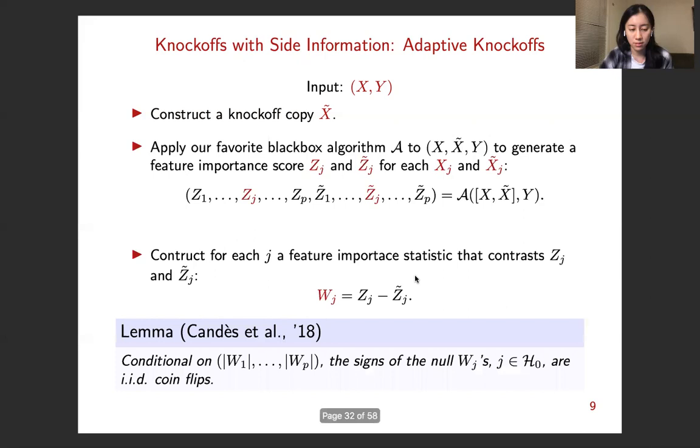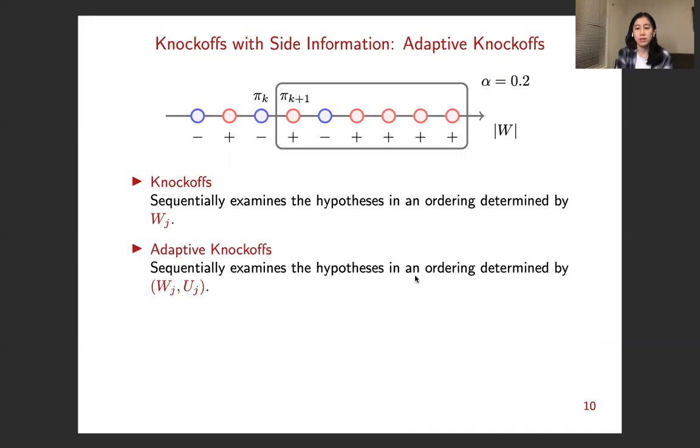So this w is going to play a key role in the following steps. And it has the nice property proved by Candès et al. in 2018 that conditional on the absolute value of w, the signs of the null wj's are i.i.d. coin flips. So having computed this w, both knockoffs and adaptive knockoffs would sequentially examine the hypotheses according to an ordering. But the difference is that the ordering of the knockoffs is determined only by the w, while the ordering of the adaptive knockoffs is determined by both w and u. So this ordering is very important in the knockoffs framework.